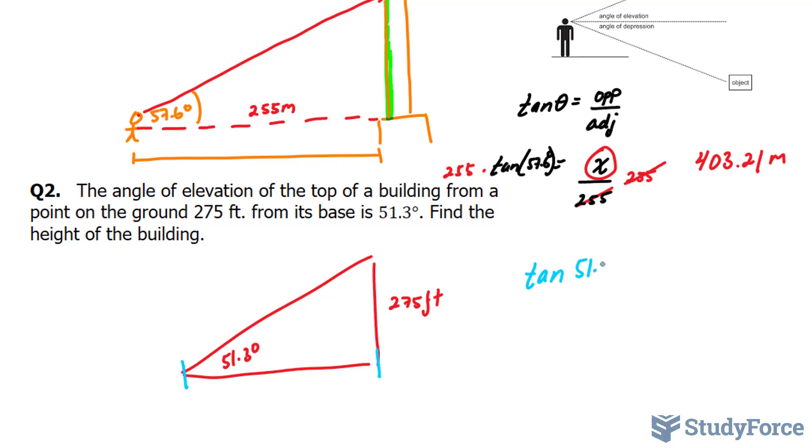Tangent of 51.3. We have the opposite, which is 275, and we're looking for the adjacent. So this time our unknown is at the bottom of the ratio on your right.